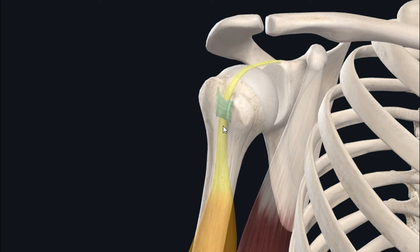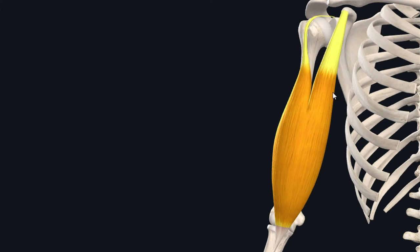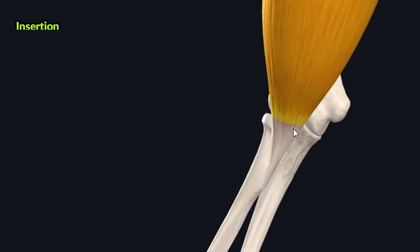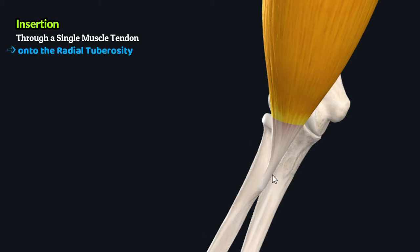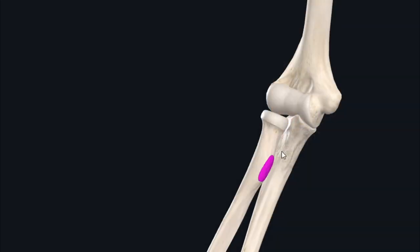The bicipital groove of the humerus is formed between the greater and lesser tubercles of the humerus. After origin, the two heads of the biceps brachii converge to form a single muscle belly, which then inserts through a single tendon onto the radial tuberosity — an outgrowth on the proximal medial aspect of the radius.